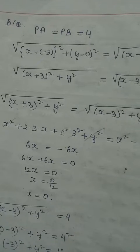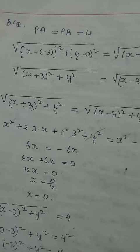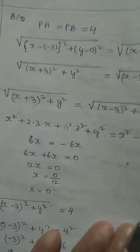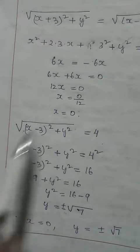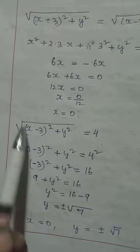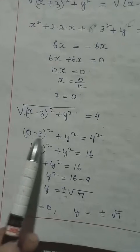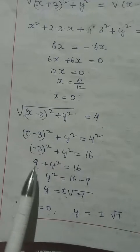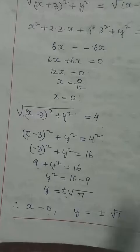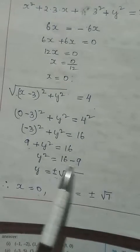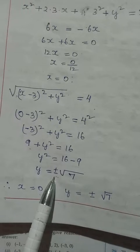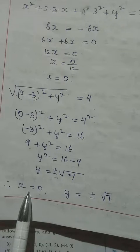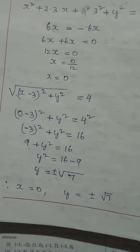Now to find y, we take either distance equal to 4. Replacing x with 0: we get the square root of 0 minus 3 whole square plus y squared equals 4. Squaring both sides: 9 plus y squared equals 16. So y squared equals 16 minus 9 equals 7. Taking the square root, y equals plus or minus root 7. Therefore the value of x is 0 and the value of y is plus or minus root 7.